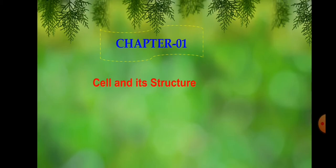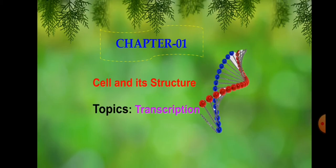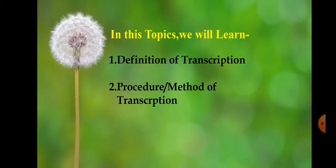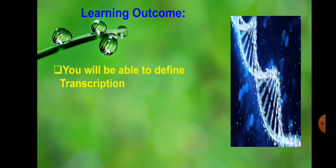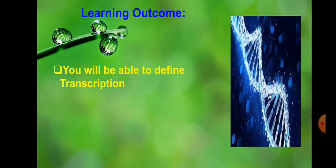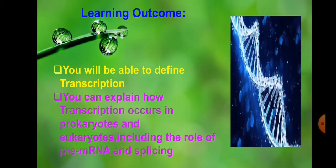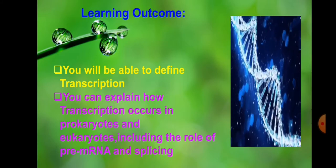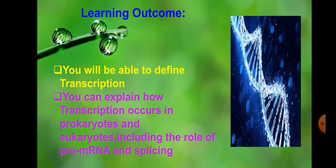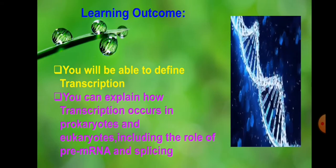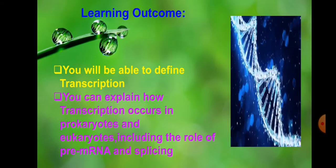Today we learn the topics of transcription, which is included in chapter 1: cell and its structure. In these topics we will learn the definition of transcription and the procedure or method of transcription. Learning outcome: you will be able to define transcription and explain how transcription occurs in prokaryotes and eukaryotes, including the role of pre-mRNA and splicing.